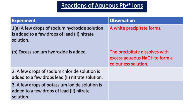Having completed experiments 1A and 1B, we record the observations in our table. A few drops of sodium hydroxide solution added to lead nitrate solution gives a white precipitate of lead-2 hydroxide. When excess sodium hydroxide is added, this lead-2 hydroxide solid dissolves in excess aqueous NaOH to form a colourless solution.